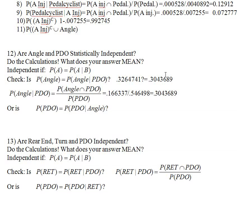No, they're not the same number. It's close-ish, but more than two percent different, so I would not say those two values are equal. Because they are not equal — and they must be equal to be independent — angle and property damage only are not independent. They are dependent.